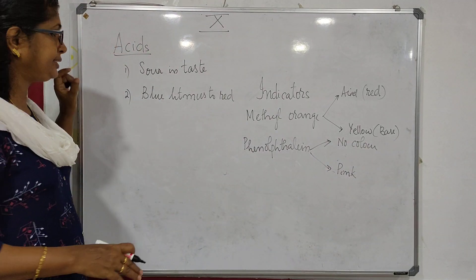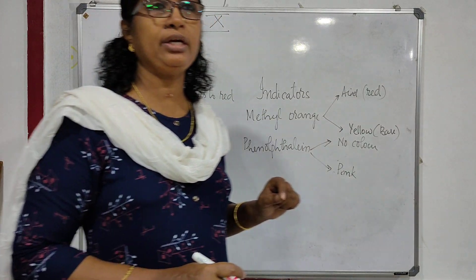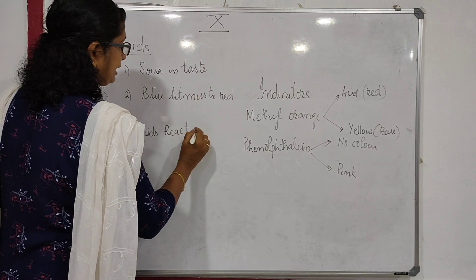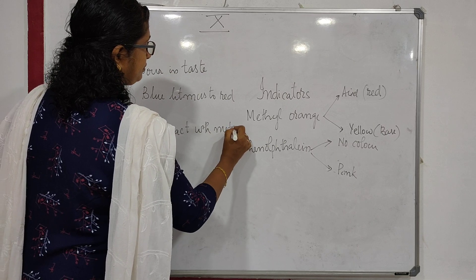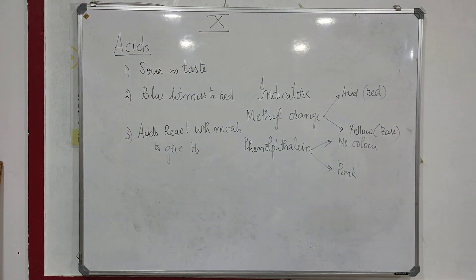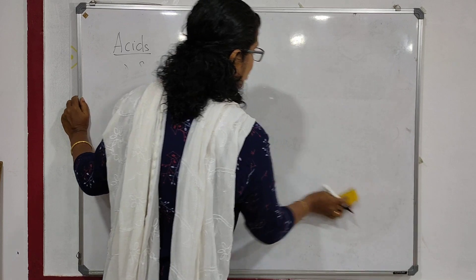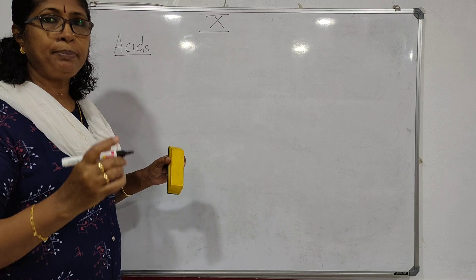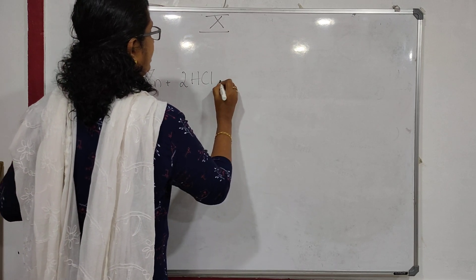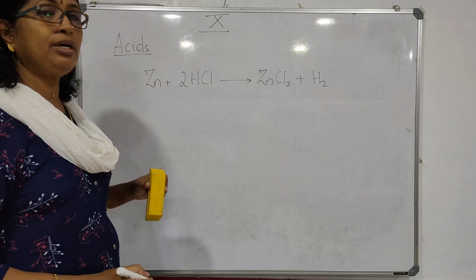So acids are sour in taste. They turn blue litmus to red. Then acids react with the metals to give hydrogen gas. For example, you take zinc granules and add acid — you will get a colorless, odorless gas which when burned will burn with a pop sound. Zinc plus 2HCl will give you ZnCl₂ plus H₂. The hydrogen gas will burn with a pop sound. So metals will react with the acids to give hydrogen gas.